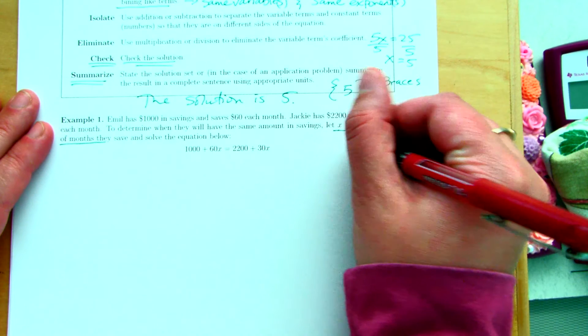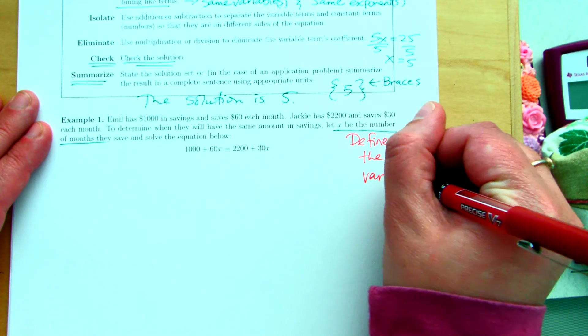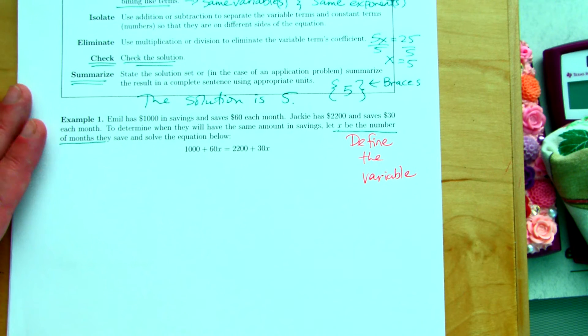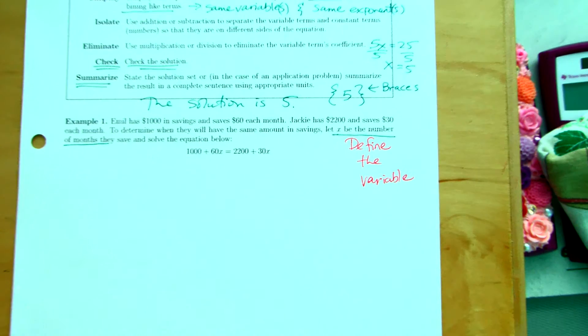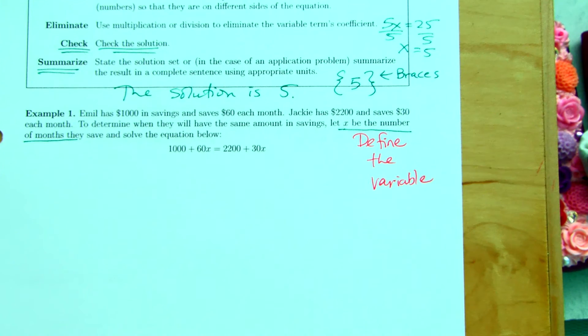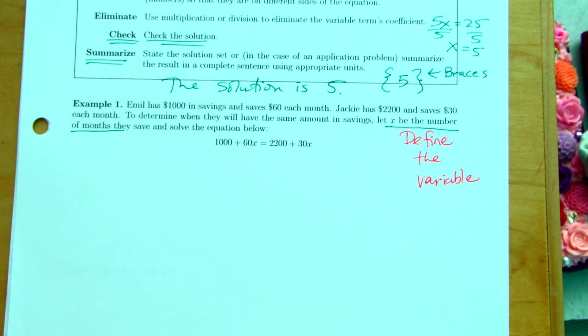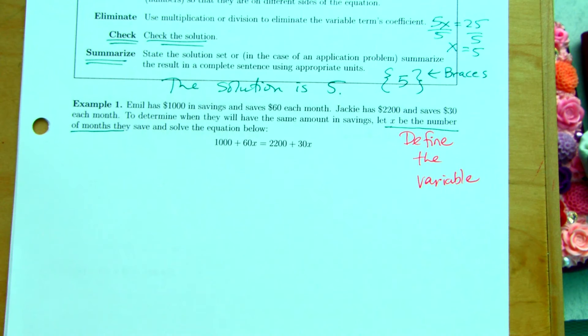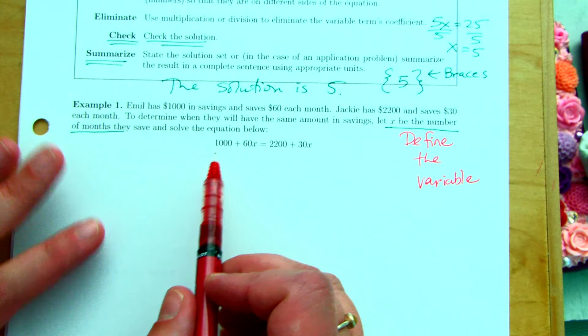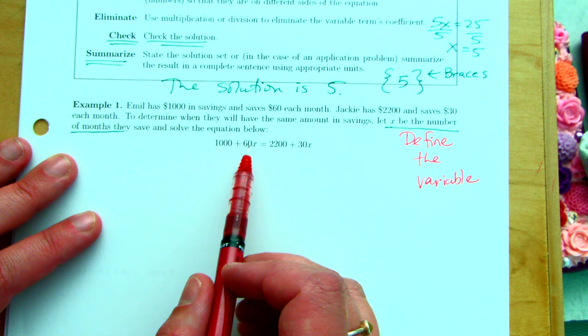Define the variable. So, in order to solve this, to find out how many months, what would we need to do? Is there anything that we can simplify on each side? No, because we can't combine these. They're not like terms, right? We want to get all of our X's onto one side, and we want to get all of our constants. The $1,000 is a constant. This is what she started with. $60 per month is what she's saving.